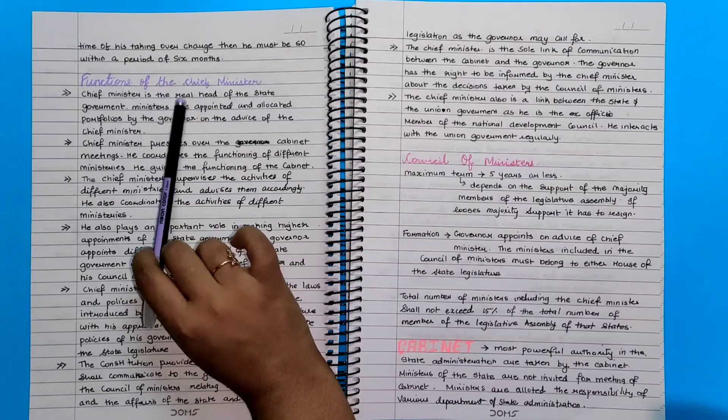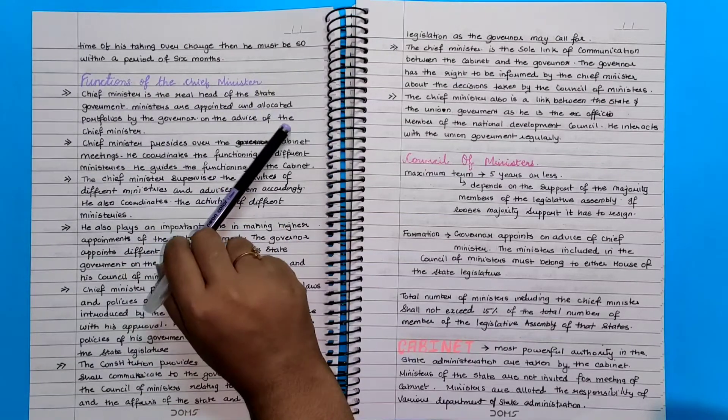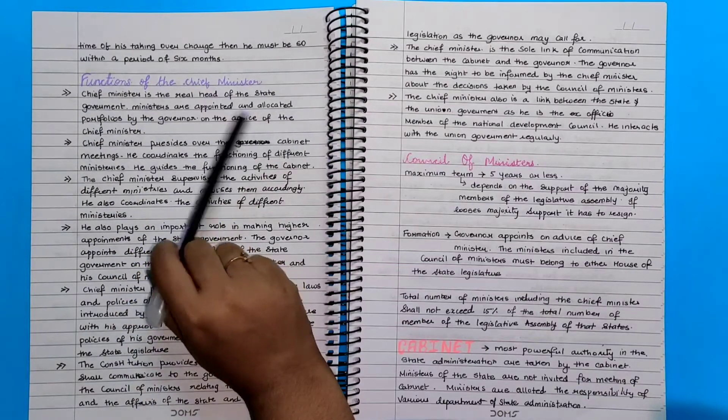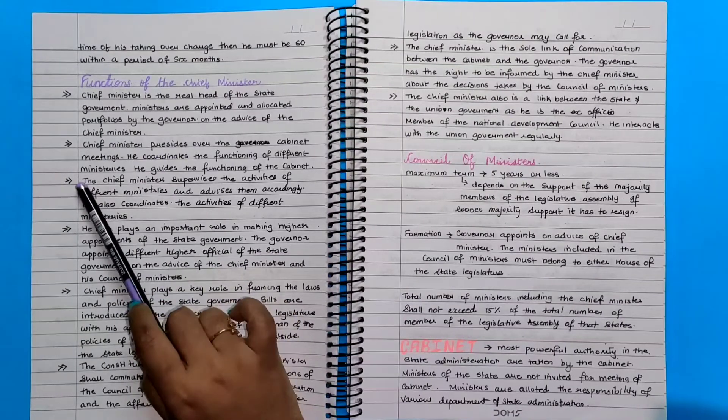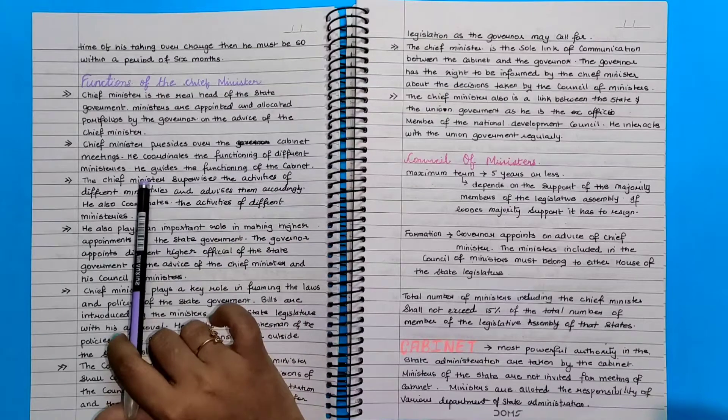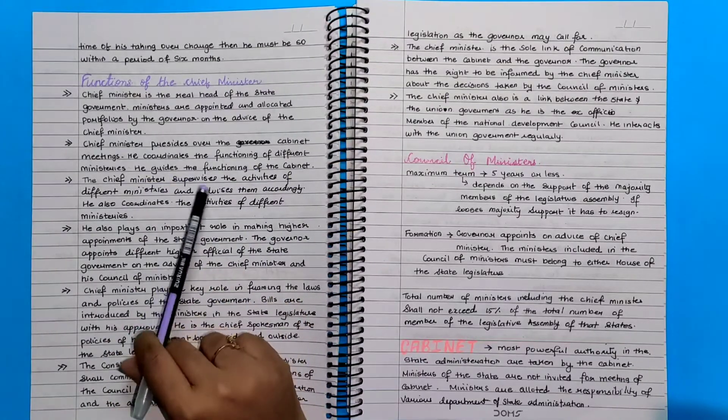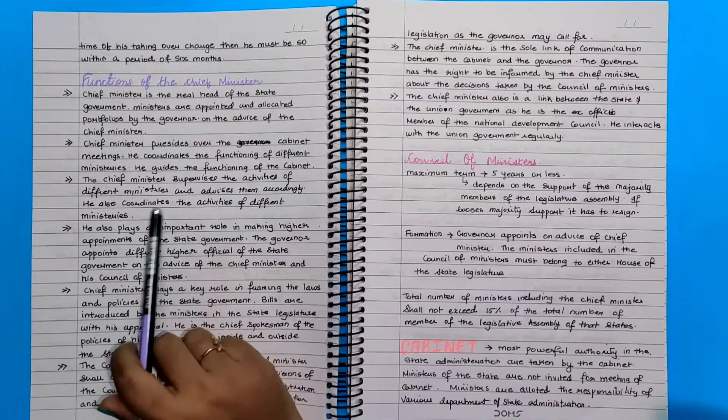Functions of the chief minister: Chief minister is the real head of the state government. Ministers are appointed and allocated portfolios by the governor on the advice of the chief minister. Chief minister presides over the cabinet meeting. He coordinates the functioning of the different ministers. He guides the functioning of the cabinet.